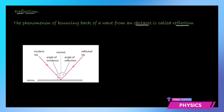Here you can see there is an incident ray which falls on the mirror. It has to be an opaque obstacle from where it will bounce back, because if it is transparent it will pass on to the other side. So the phenomenon of bouncing back of a wave from an opaque obstacle is what causes reflection.